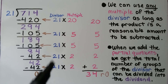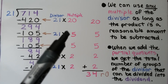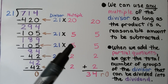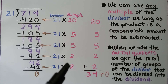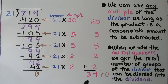We add all of these up: 20 plus 5 plus 5 plus 2 plus 2. We get 34. These are our partial quotients, and our full quotient is 34 remainder 0.